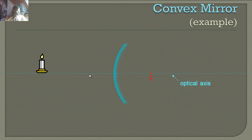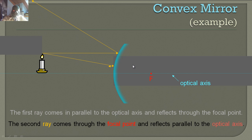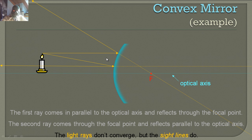For a convex mirror example: the ray comes in parallel to the optical axis and reflects as if from the focal point. The second ray comes directed towards the focal point and bounces parallel to the optical axis. If we continue these sight lines, they're going to converge on this side of the mirror.